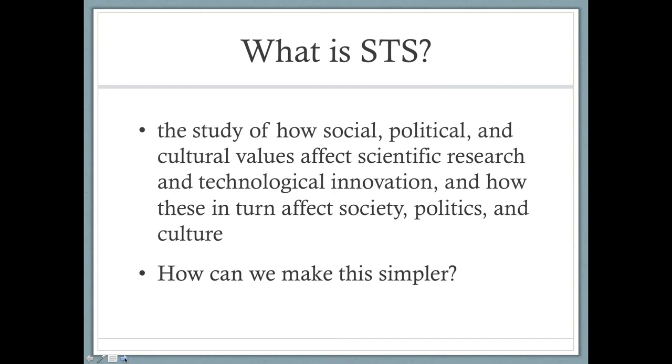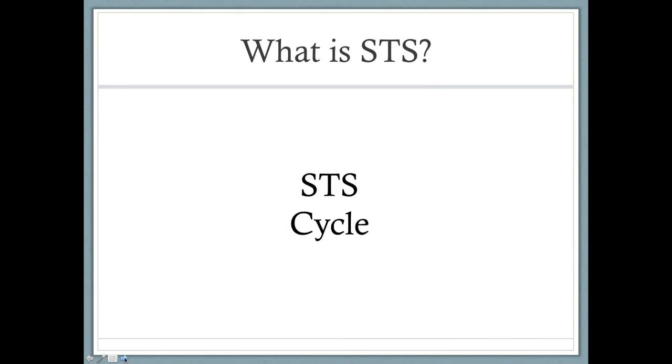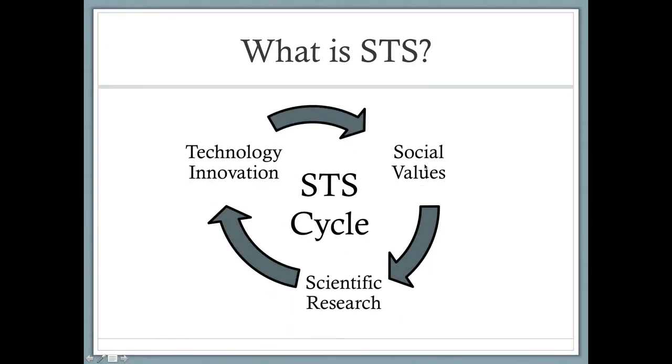So an easier way of stating this is to make a diagram that shows the STS cycle. You have social values—whatever society wants, needs, or feels they need—that promotes what science researches and learns about.